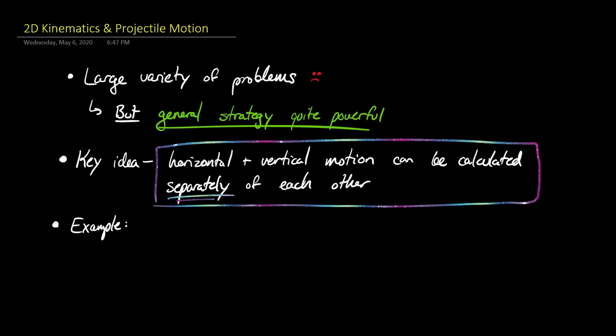A key idea we're going to use in almost every problem — the focus of 2D kinematics versus 1D — is that horizontal and vertical motion happen independently. You can use equations to determine how far something moves horizontally and what its horizontal speed is completely independently of the vertical speeds and how far things move up and down. You can calculate them separately. An example: if a ball rolls off a table and rolls off horizontally with speed 3 meters per second,